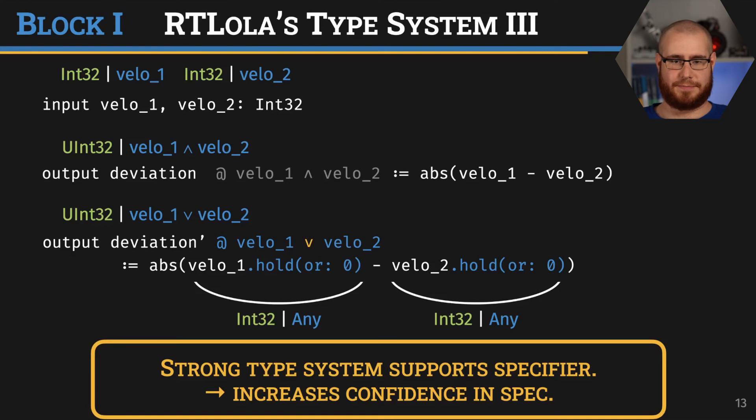It's really similar to different programming languages, where a strong type system forces the programmer to really state and think about what they want to express. Thus, if they find a piece of code, or in this case a specification that goes through the type system and type checker, then we have some confidence that the specification cannot be completely wrong. So much about the type system. Before we go on with a more involved example of RTLola, you once again have a chance to ask questions.